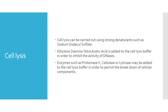The lysis of the cell depends on the type of the cell. For instance, plant cells will require an enzyme known as cellulase to degrade the cellular components, which primarily consist of cellulose. In the case of yeast, the enzyme lyticase may be utilized to degrade cellular components associated with yeast.